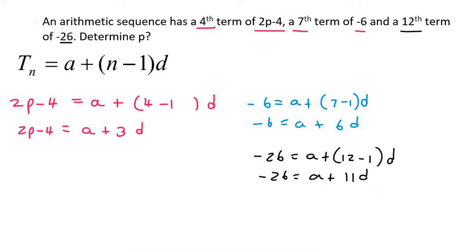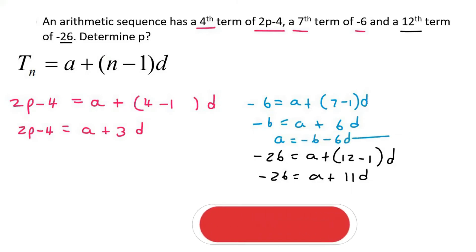So you can solve this however you like, but I'm going to take this equation and I'm going to get a by itself. So if I do that, I'm going to find out that a is minus 6 minus 6d, and I'm going to plug that into this one's a. So it's going to look like this. It's going to go minus 26 equals to, and then a is minus 6 minus 6d plus 11d.